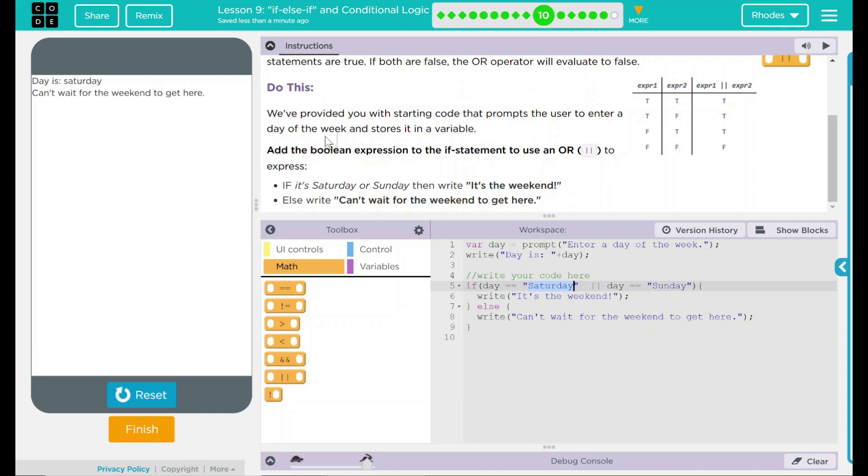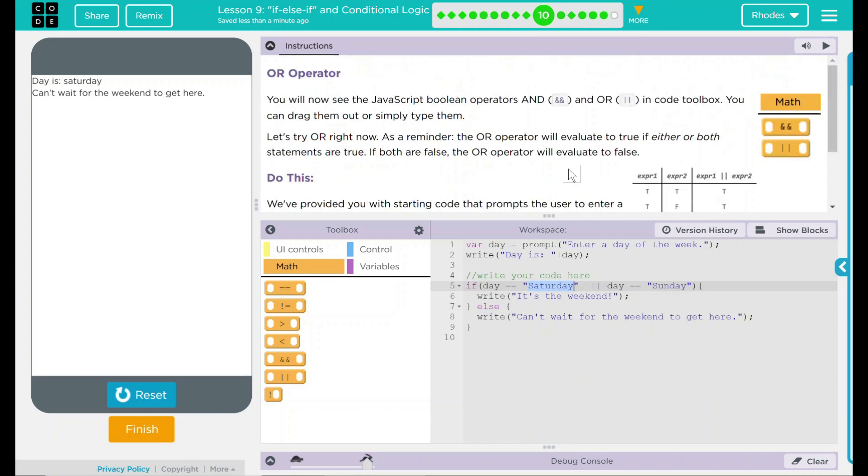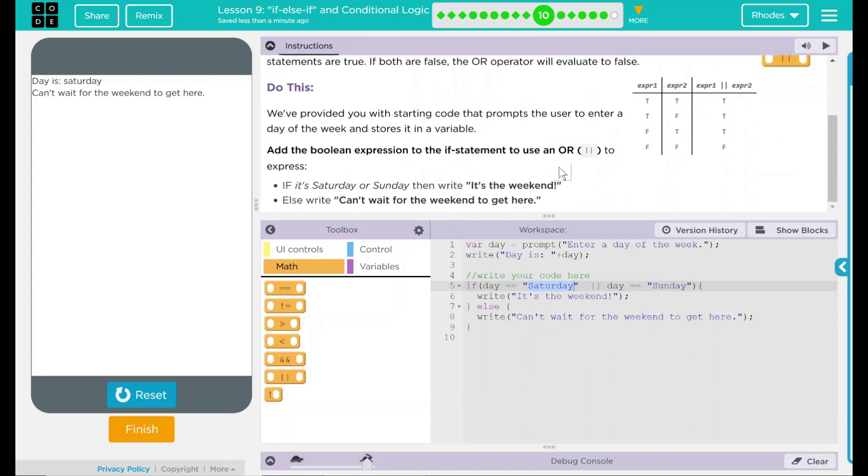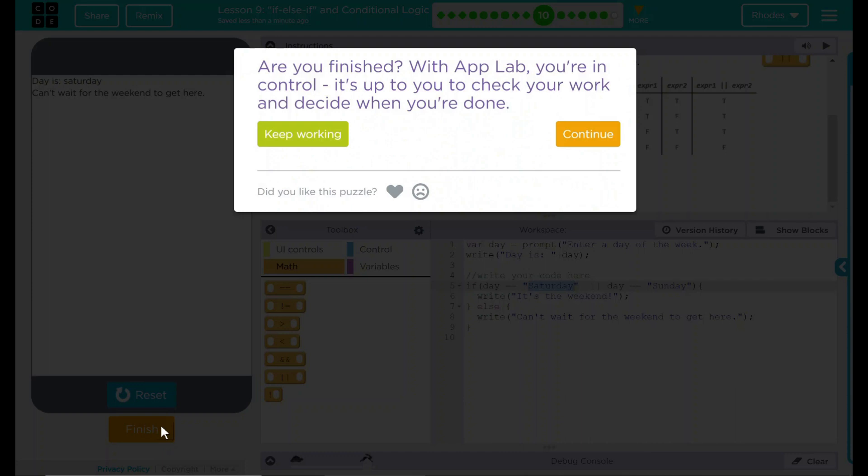Looking back up here, we added an if statement for Saturday and Sunday that writes it's the weekend, and otherwise it writes can't wait for the weekend to get here. That's really all we had to do for this lesson. Let's see if code.org wants anything else. Nope. Good job, kids. I'll see you on the next lesson.